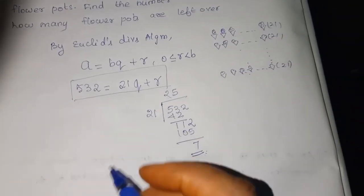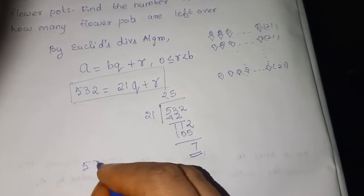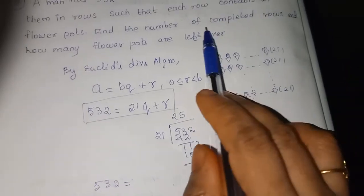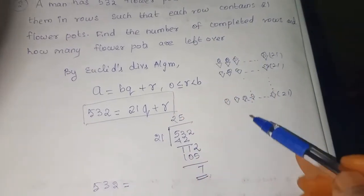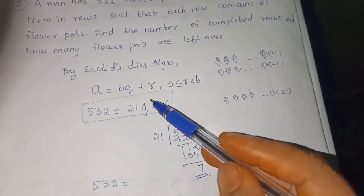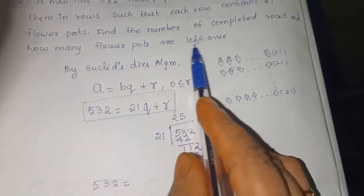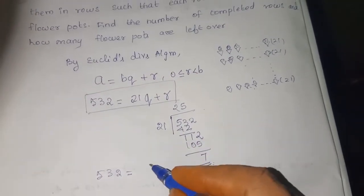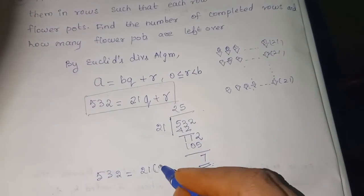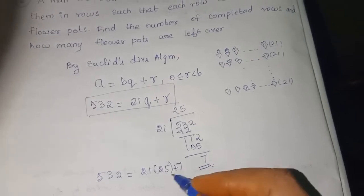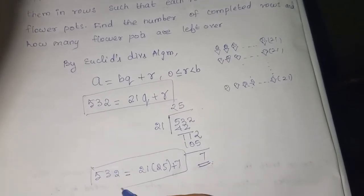How this statement will change? 532 is equal to... We want to find Q and R. Because find the number of completed rows. Number of rows is the quotient. This is 25. Flower parts left over is the remainder. 21 into 25 plus 7. You got it. This equation is balanced.